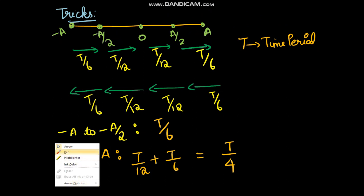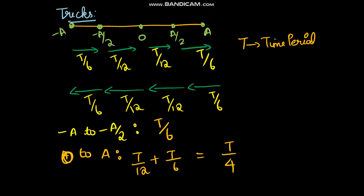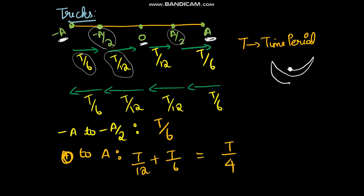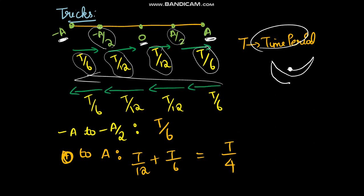Now for a very commonly asked question type: for a pendulum moving from equilibrium position O to one extreme A, back to O, to the other extreme -A, and back to O — the time taken from -A to -A/2 is T/6, from -A/2 to 0 is T/12, from 0 to A/2 is T/12, and from A/2 to A is T/6. Here T is the time period. The same applies in reverse.